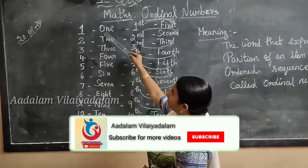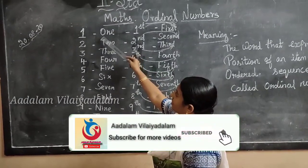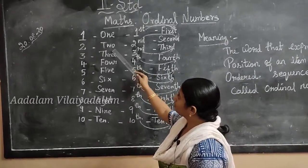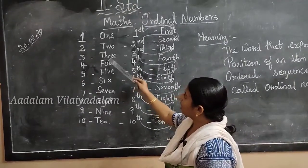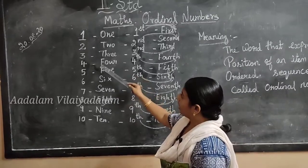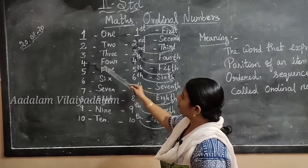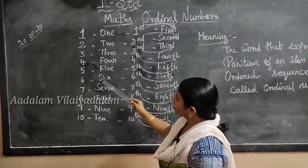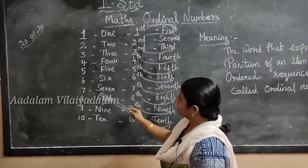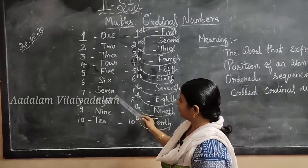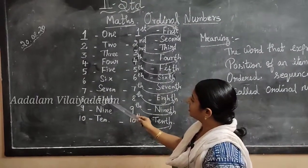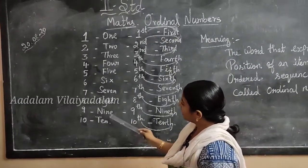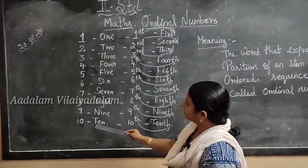And this you have to write in spellings. One — O, N, E. Two — T, W, O. Three — T, H, R, E, E. Four — F, O, U, R. Five — F, I, V, E. Six — S, I, X. Seven — S, E, V, E, N. Eight — E, I, G, H, T. Nine — N, I, N, E. Ten — T, E, N.